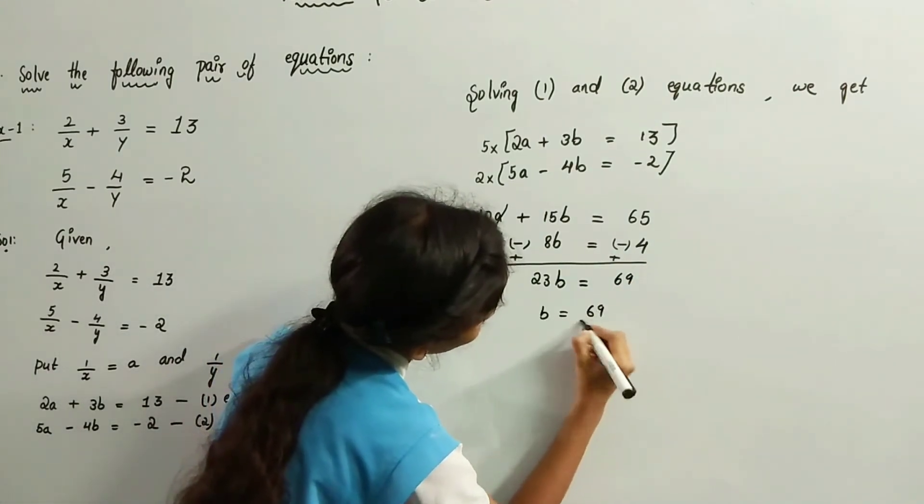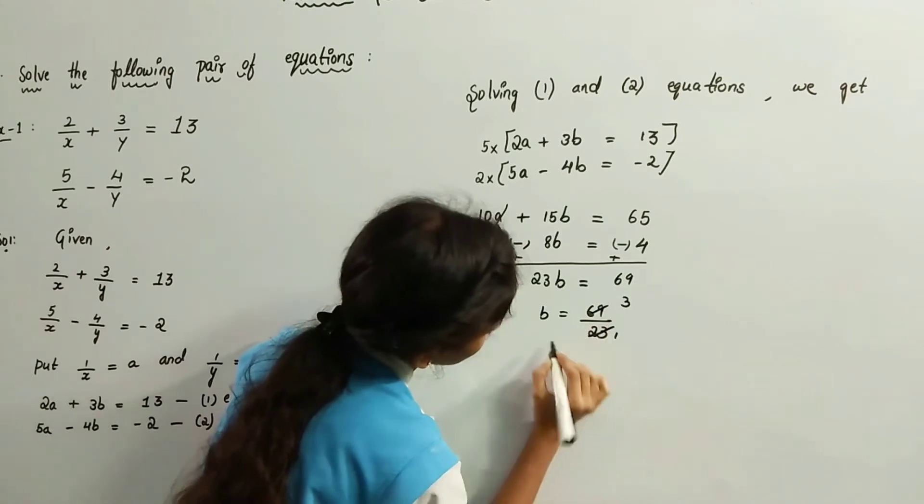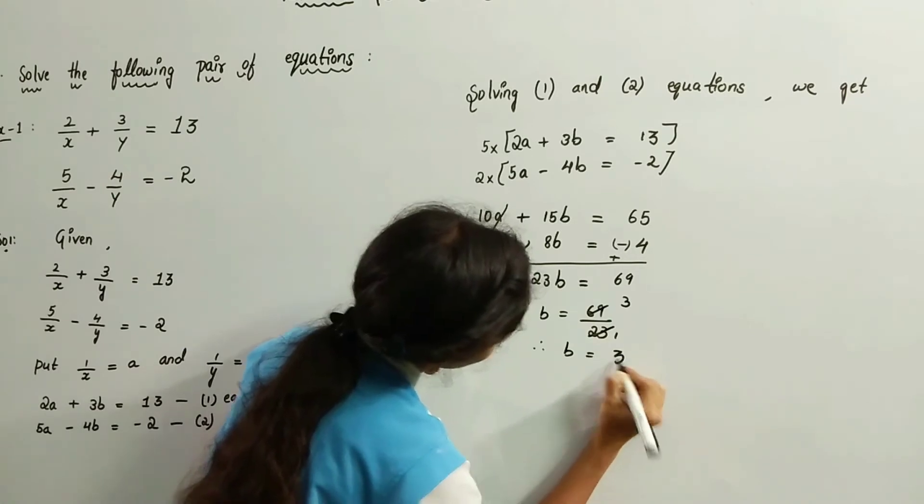B equals 69 by 23. 23 threes are 69. Therefore, B equals 3.